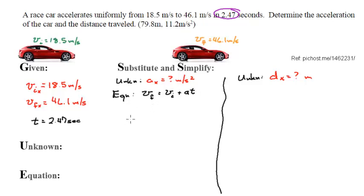When I replace numbers for letters, my velocity final is 46.1 equals 18.5 plus acceleration, which I don't know, but I do know 2.47 seconds. Now I'm going to subtract 18.5 from the right to cancel, but whatever I do to the right, I have to do to the left, and so I get 27.6 equals 2.47 acceleration.